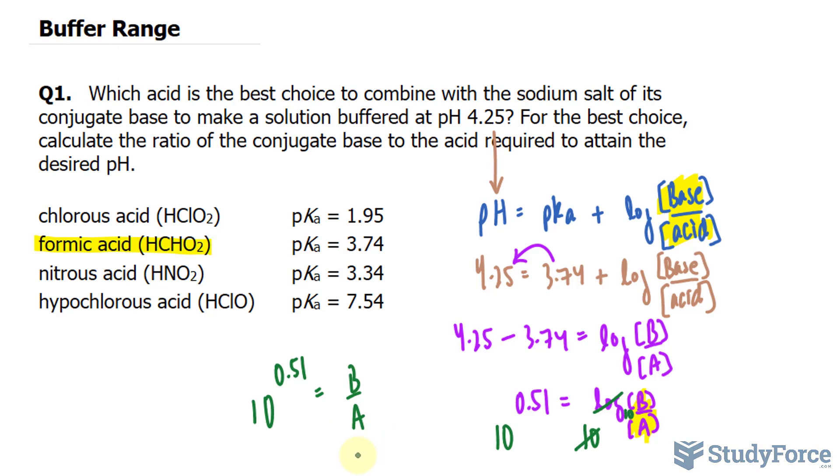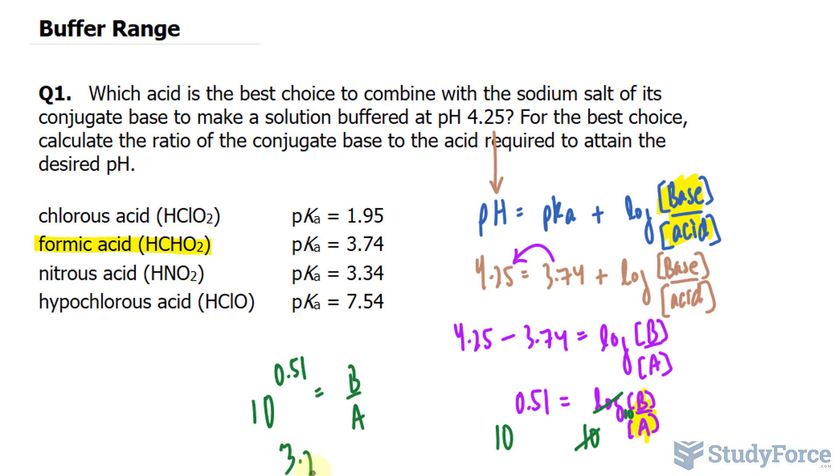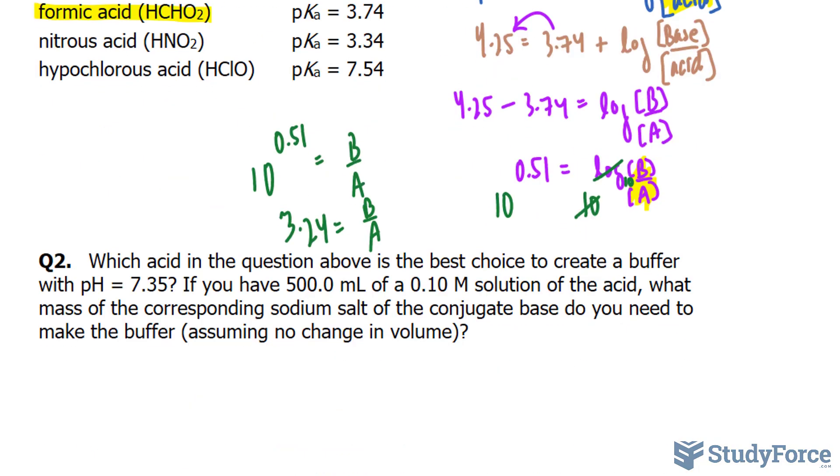And we need this to two significant figures after the decimal place, so we'll round it to 3.24. 3.24 is equal to the ratio that we're looking for. Let's move on to question two.